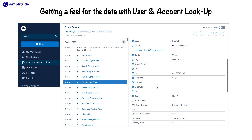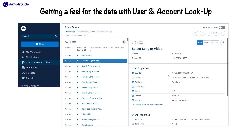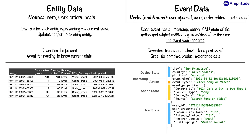Here's the important point: it is all in the event. For this to truly sink in, we'll need to cover one more idea — the difference between entity data and systems optimized for entity data, and event data and products like Amplitude. Entity data deals with nouns like users, work orders, and posts. Event data deals with verbs and the nouns connected with those verbs, like user updated, work order edited, and post viewed. With entity data, we typically have a row for each entity representing the current state of that noun. When an update happens, it happens to the existing row.